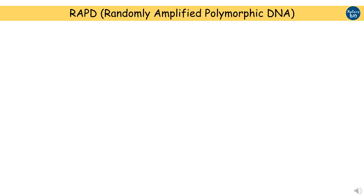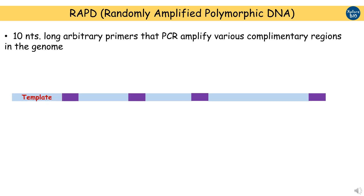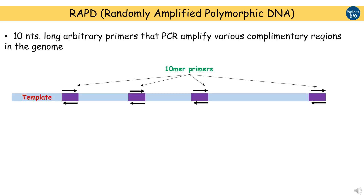RAPD, or randomly amplified polymorphic DNA, are among the most popular genetic markers. RAPD markers are 10 nucleotides long arbitrary sequences that act as forward as well as reverse primers and amplify complementary regions in the genome.